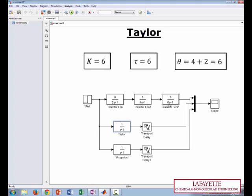The dead time is equal to the other time constants in the denominator that aren't tau, plus any dead time that already exists in the system. So we've already used the 6 as our tau. But we still have time constants of 2 and 4.